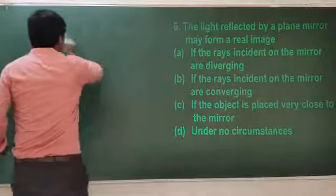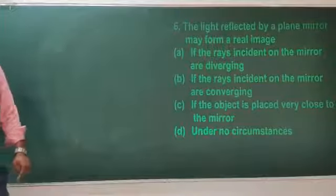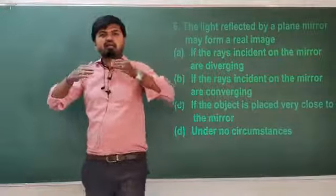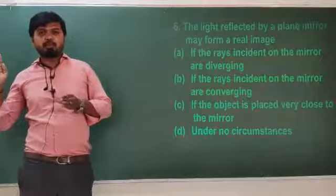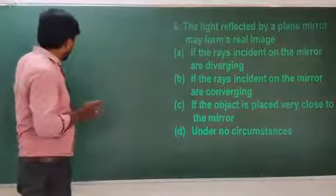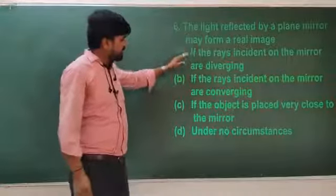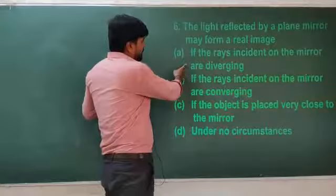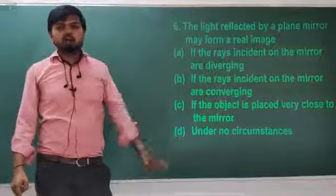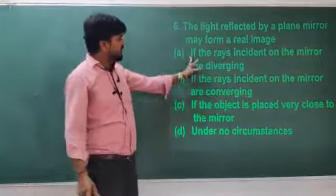Next question: the light reflected by a plane mirror may form a real image. One thing we should remember — a real image is always formed at a convergent point and always in front of the plane mirror. If the rays incident on the mirror are diverging, a virtual image is formed, so diverging rays is not the right answer.